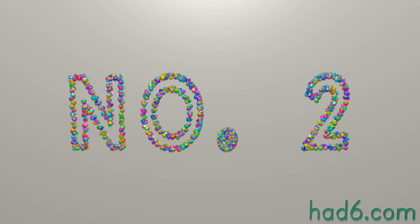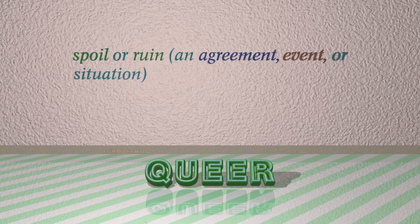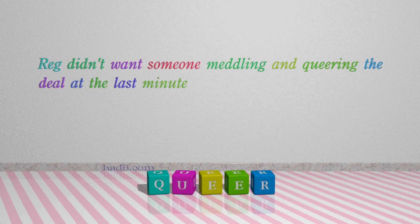Number 2: Queer. Which means: Spoil or ruin an agreement, event, or situation. For example: Reg didn't want someone meddling and queering the deal at the last minute.